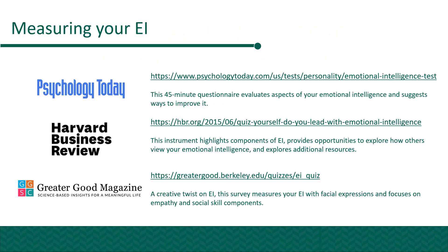So how do you know where you stand today? The following three instruments can be used to gauge your emotional intelligence. Psychology Today offers a formal questionnaire that takes about 45 minutes to complete, evaluates your emotional intelligence, and gives you suggestions to improve it. The Harvard Business Review covers different components of EI, provides opportunities to explore how other people view you in regards to emotional intelligence, and gives additional resources. And then Greater Good Magazine — it's a creative twist on emotional intelligence. This survey measures your EI by presenting facial expressions focused on empathy and social skills, asks you to address your perception, and then gives you your findings.